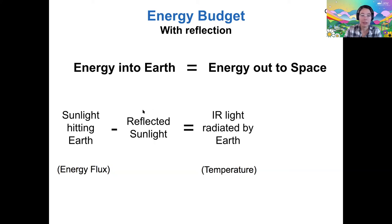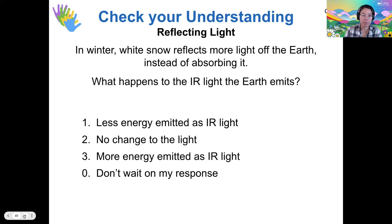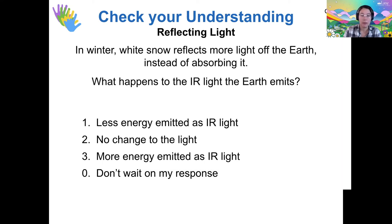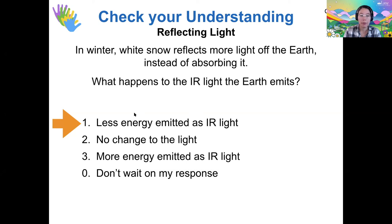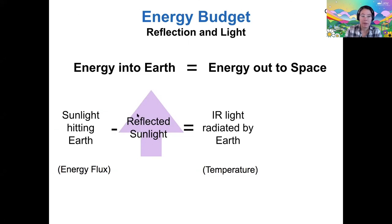This governing equation hasn't changed, but we are now considering additional factors. For example, there's more snow across the northern hemisphere — where there are more continents — in the winter. So in the northern hemisphere winter, we have more snow and we reflect more light. What would happen to the infrared light Earth emits in this case? Most votes are for option one: if there's more reflection, then there's less total energy coming in, so there needs to be less total energy going out, and less energy would be emitted as infrared light.